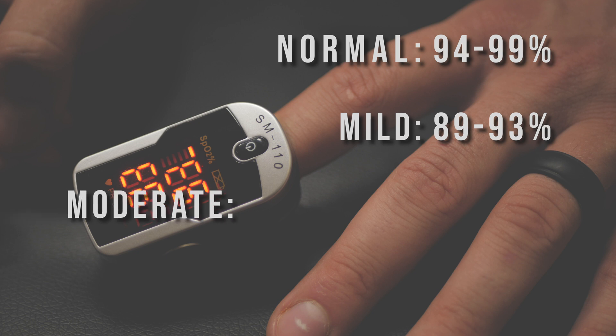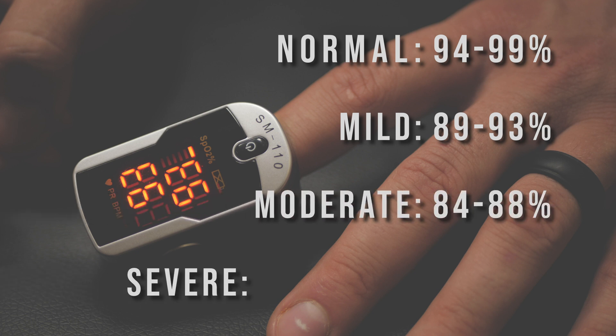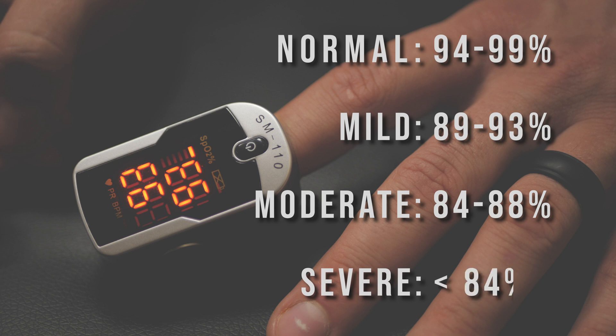Once a patient drops down into the 80s it gets more severe, and we really don't want to see a patient in the 70s. I've seen it, and those people in the 70s — sometimes even 60s — are people we need to treat aggressively and get that oxygen percentage back up, because it's very dangerous for the brain and other organs to function with such a low state of oxygen.